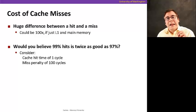The difference in time cost of a hit and a miss is huge, could be 100x. That means that a hit can be 100 times faster than a miss. And just to make you see this in numbers, would you believe if I told you that a 99% hit is twice as good as a 97% hit in terms of time?